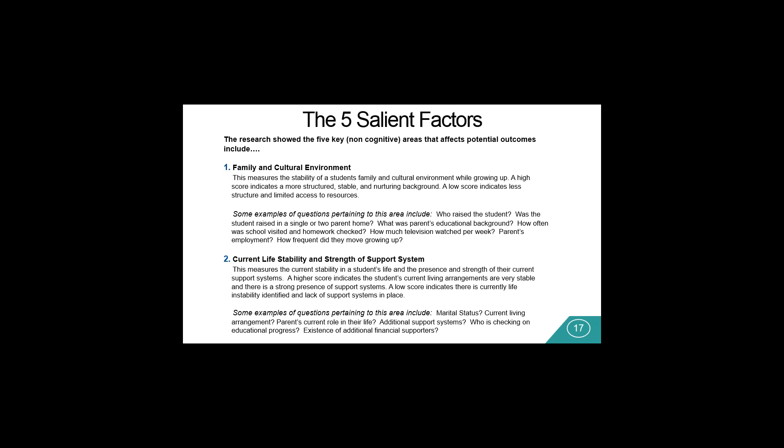The five salient factors that we found were critically important to understand in order to assess how prepared they were for higher education today. Number one: their family and culture environment growing up. This measures the stability of the student's family and culture environment while growing up — a high score indicates a more structured, stable, nurturing background; a lower score indicates limited access to needed resources. Some questions include: the parents' educational background, how often was homework checked while they were growing up, comparing television and social media time allowed per week versus schoolwork, and how often did they move growing up.